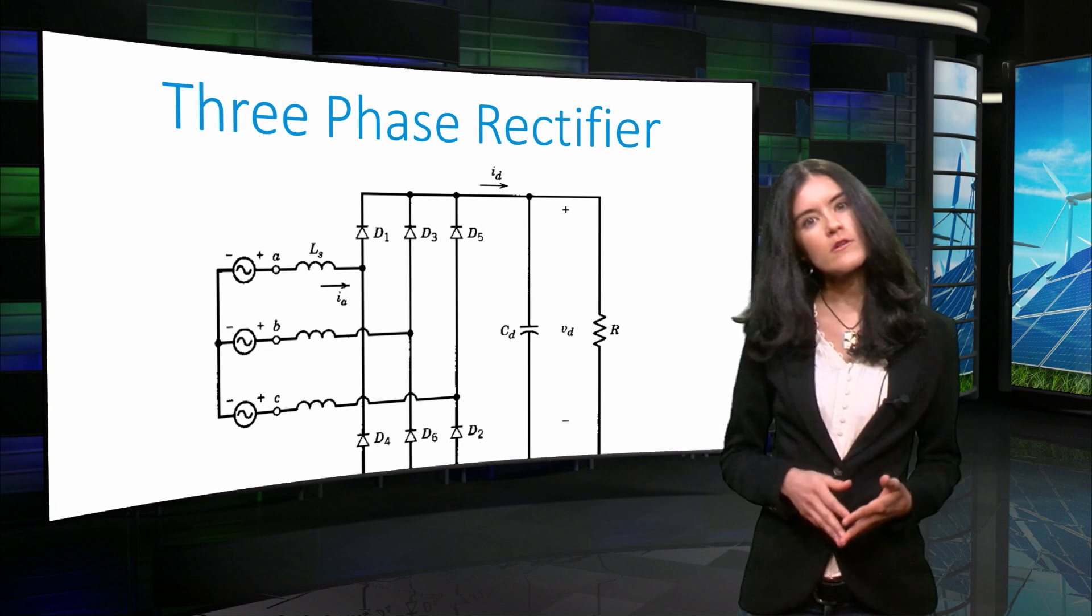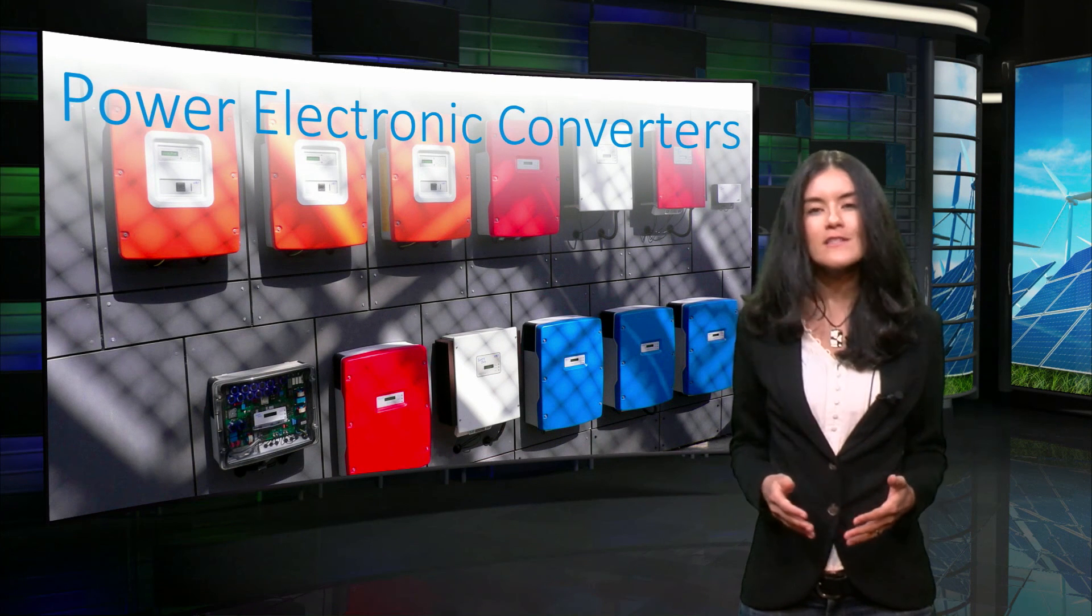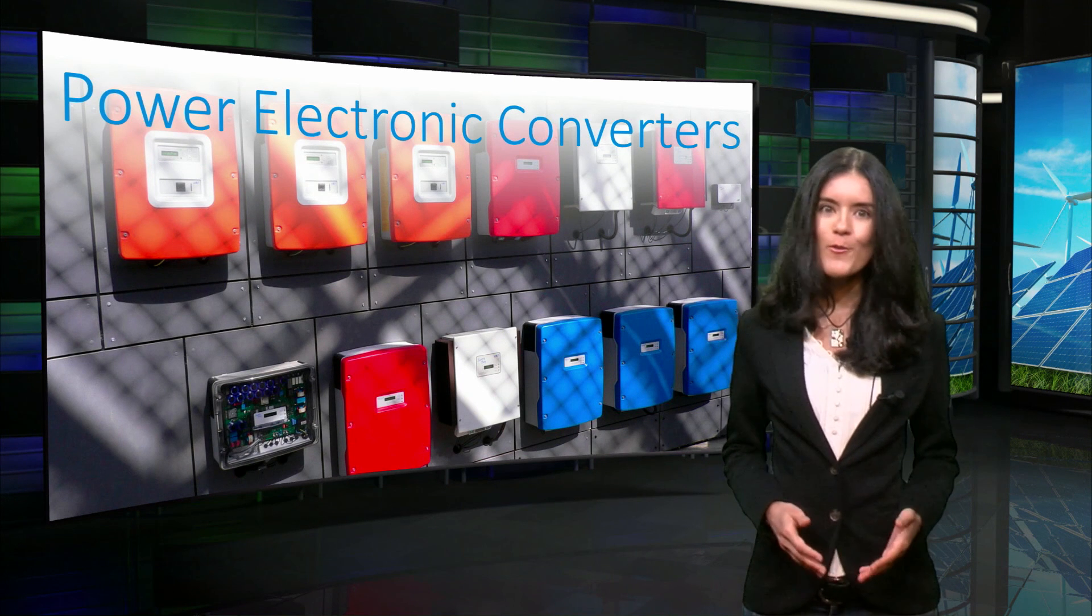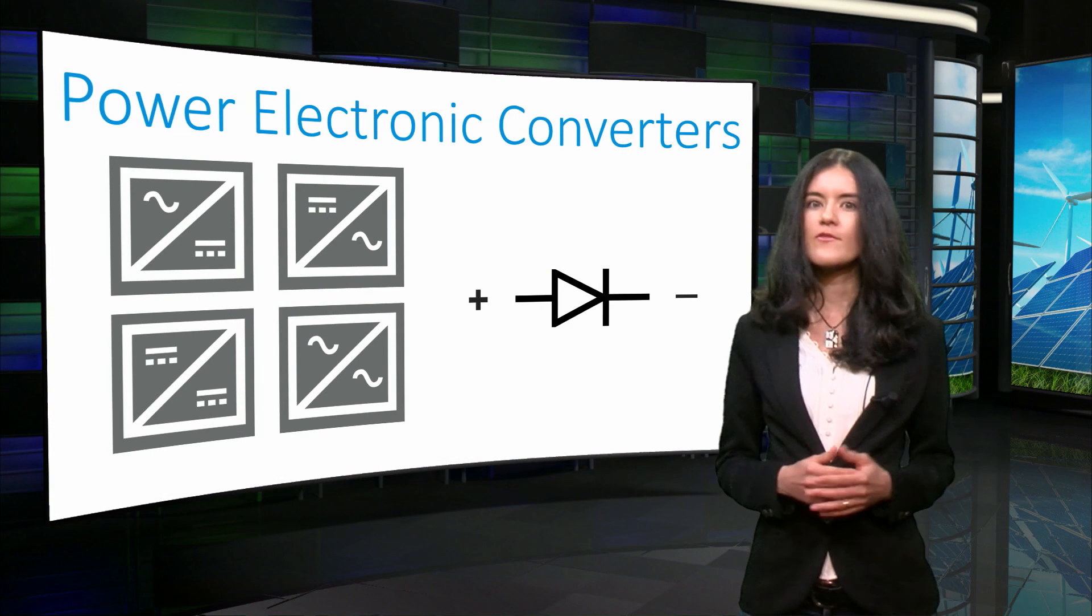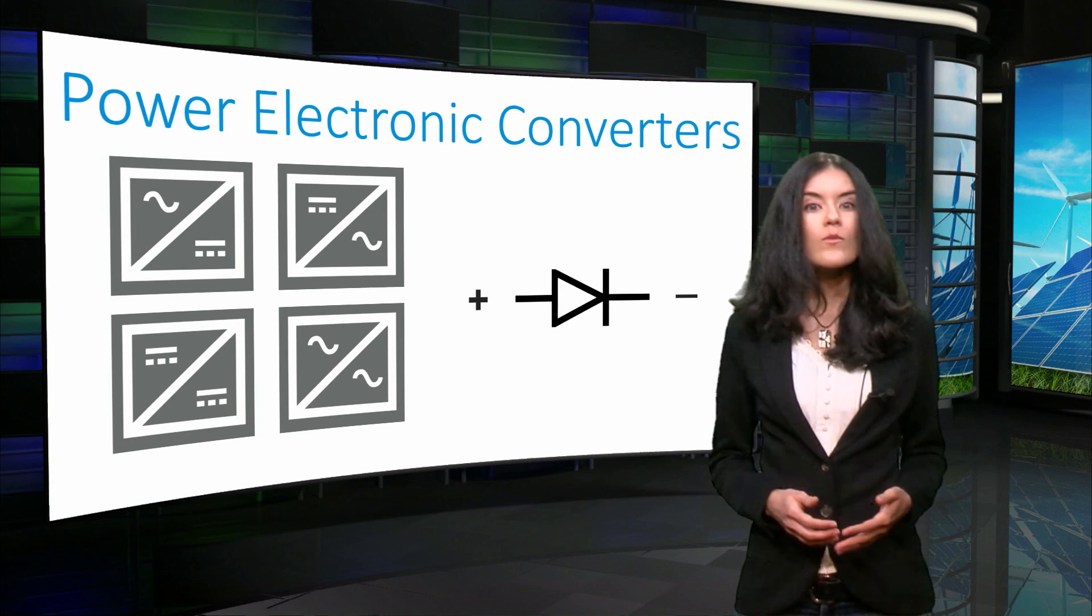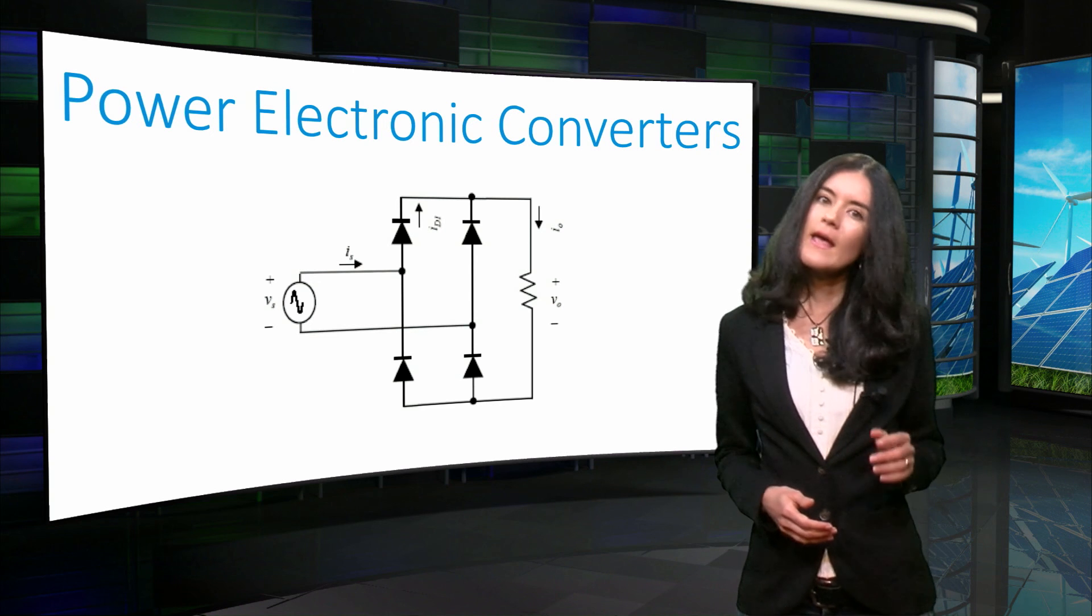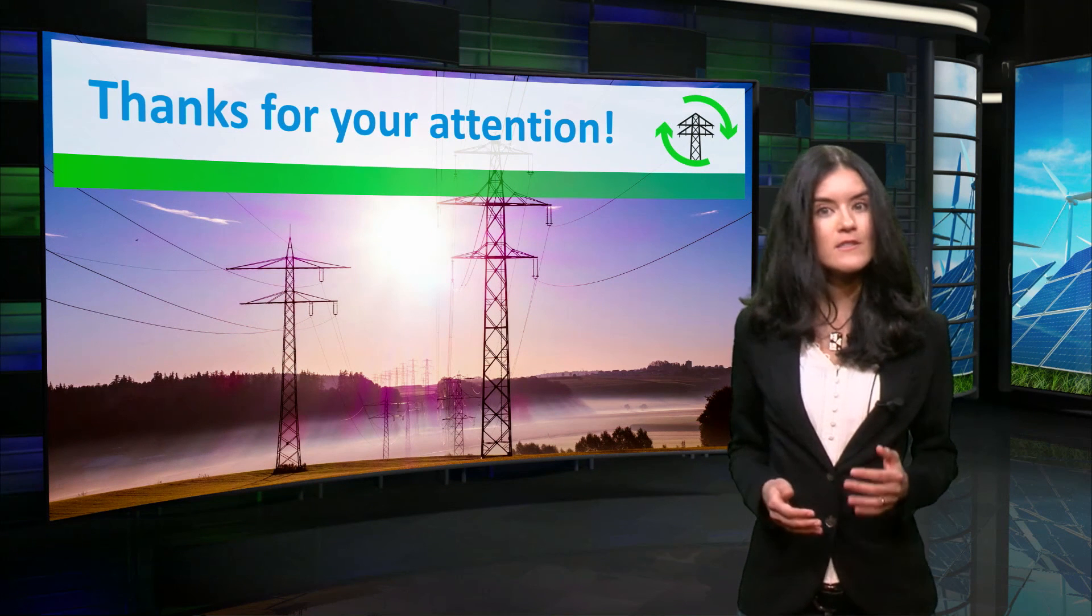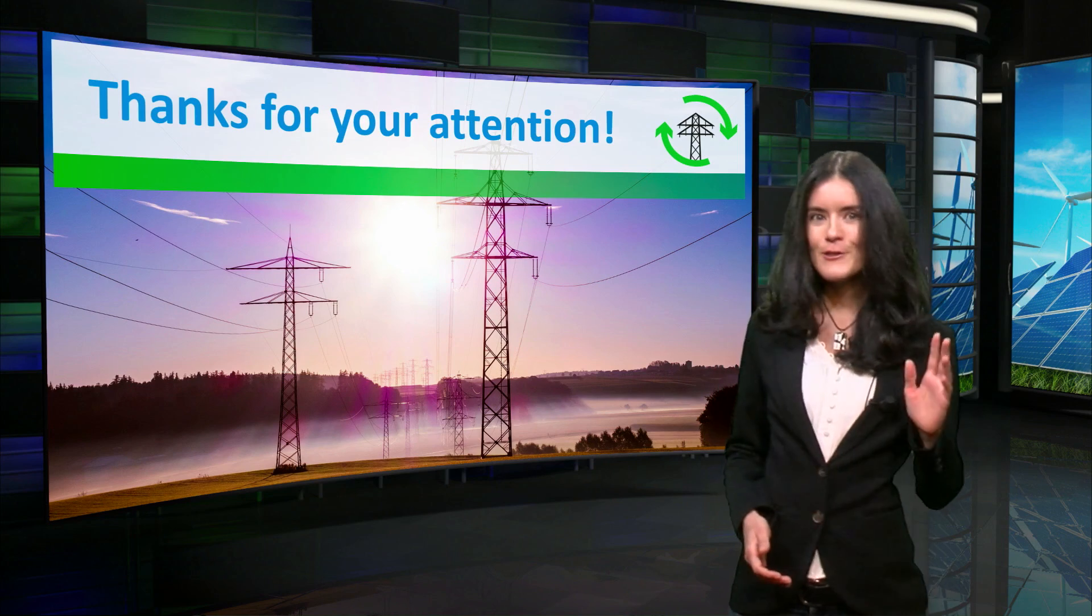We are getting closer to the end of our lecture. Today, we covered basic concepts that are necessary to understand the role of power electronics for the integration of renewable sources. We started by classifying the different types of converters, and by understanding how a diode works. Then, we discussed the operation of a rectifier using a simple circuit topology. In part 2 of this lecture, you will be able to determine which power converter is necessary to connect a photovoltaic panel to the AC distribution system. See you then!